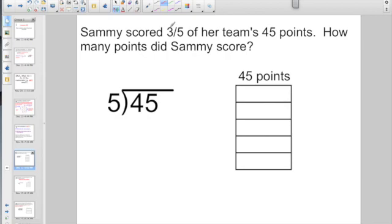The numerator is not one, but I still start off by divide by the denominator. 45 divided by 5, that's 9. And 45 points, the denominator is 5.